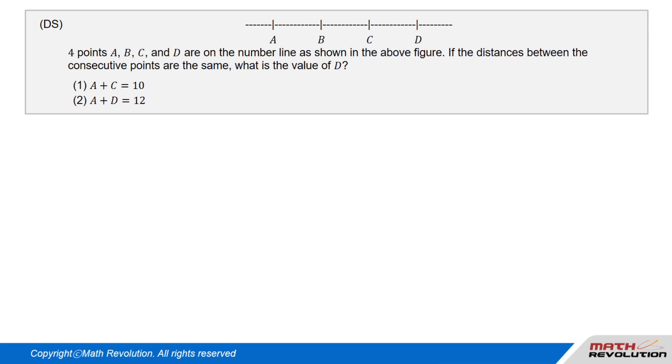4 points A, B, C, and D are on the number line as shown in the above figure. If the distances between the consecutive points are the same, what is the value of D? Condition 1: A plus C equals 10. Condition 2: A plus D equals 12.